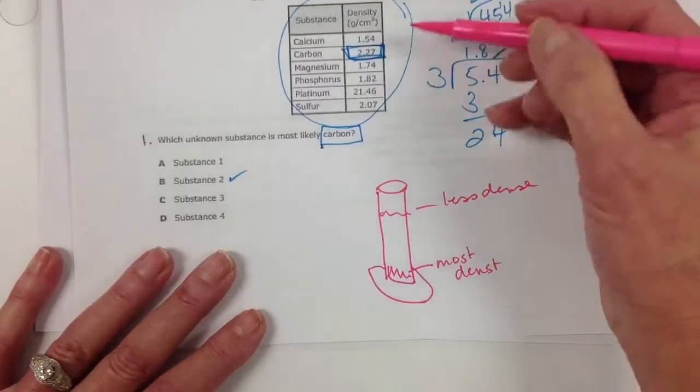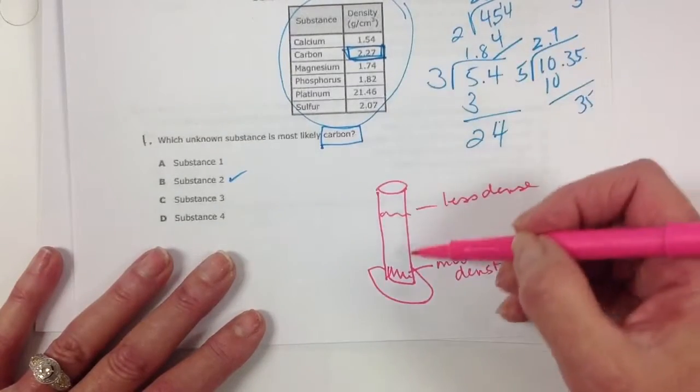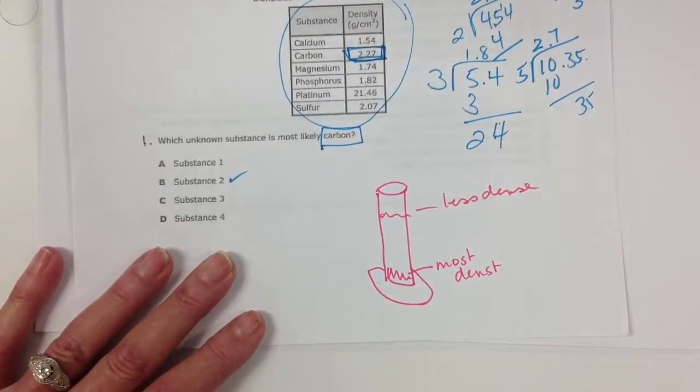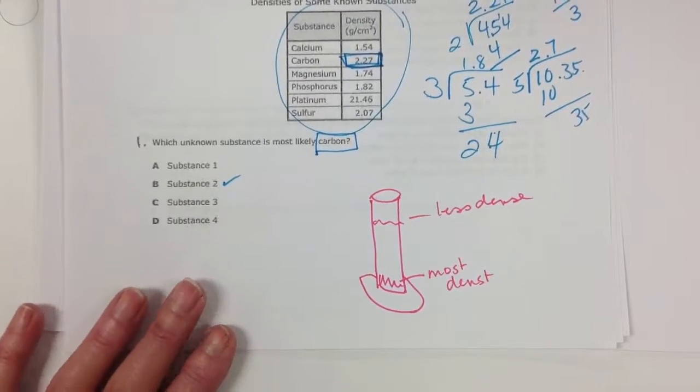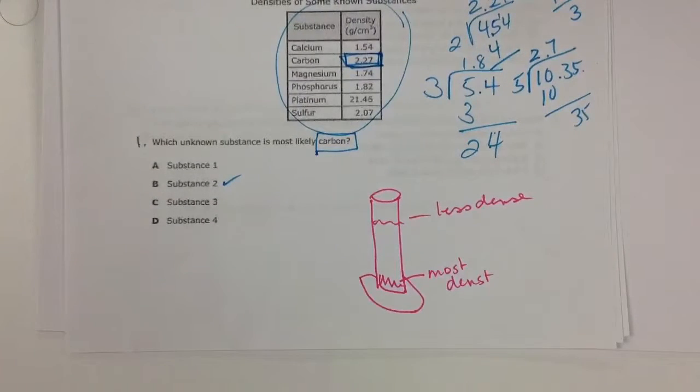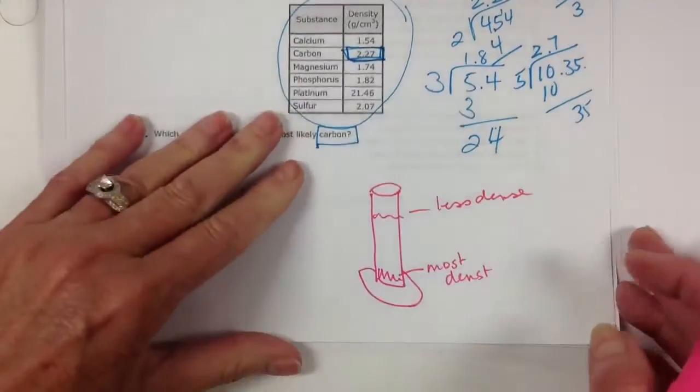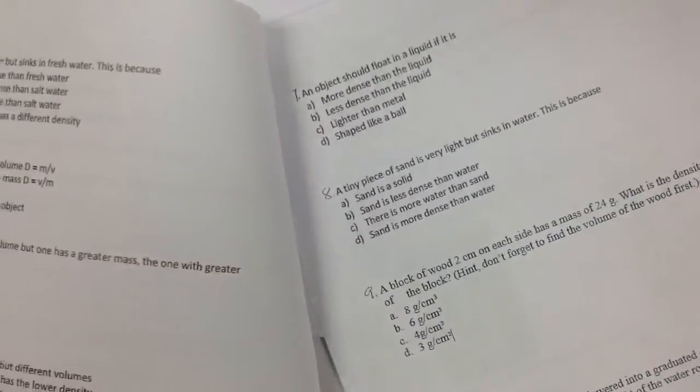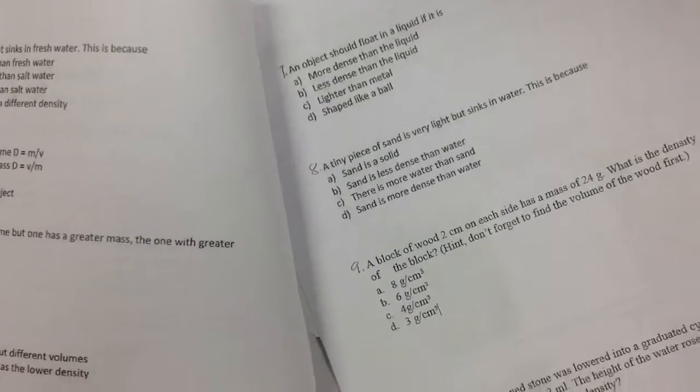And the less dense at the top. Okay. So you could actually scale these in and see where they would be as far as sink or float.